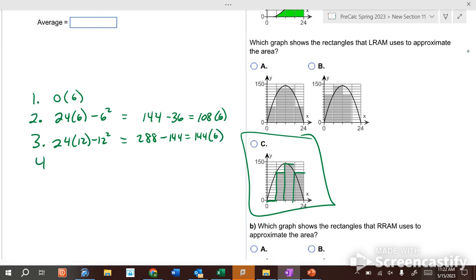The fourth rectangle, you put what in? Maybe 18. 24 times 18 is 432 minus 18 squared is—help me out, what's 18 squared? 324, which is 108 times six. So you have 108 times six plus 144 times six plus 108 times six. What do you get for your LRAM?